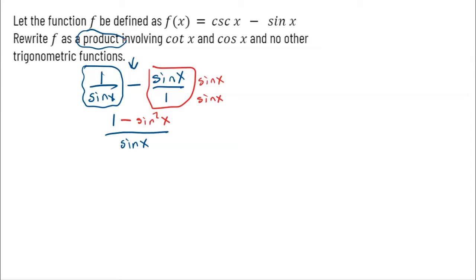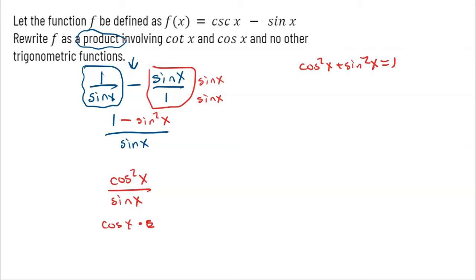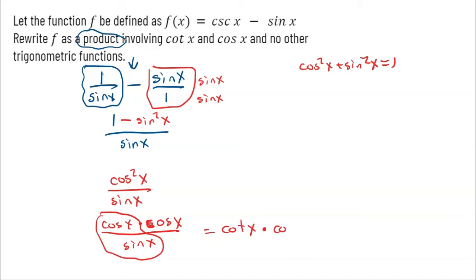Now I notice a Pythagorean identity. Anytime I see a square with a 1 nearby, I look to the Pythagorean identities. 1 minus sine squared is cosine squared of x, all divided by sine of x. That comes from cosine squared of x plus sine squared of x equals 1 — subtracting sine squared gives 1 minus sine squared equals cosine squared. Now I'm going to separate cosine squared into cosine of x times cosine of x over sine of x. Cosine divided by sine is cotangent of x, and the remaining cosine of x is still there.